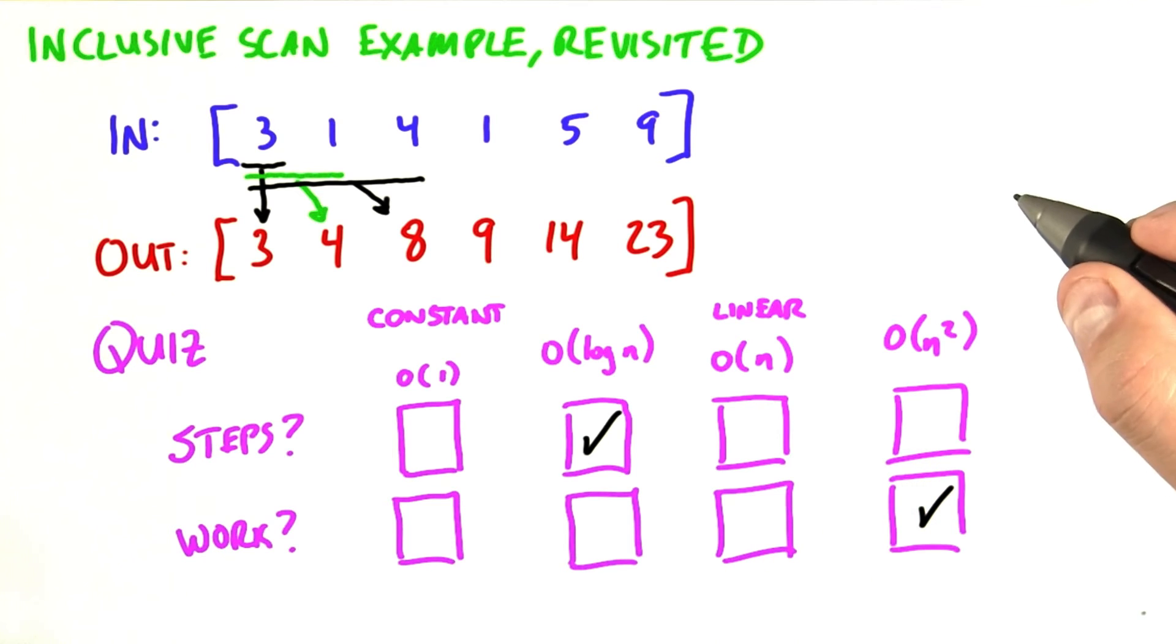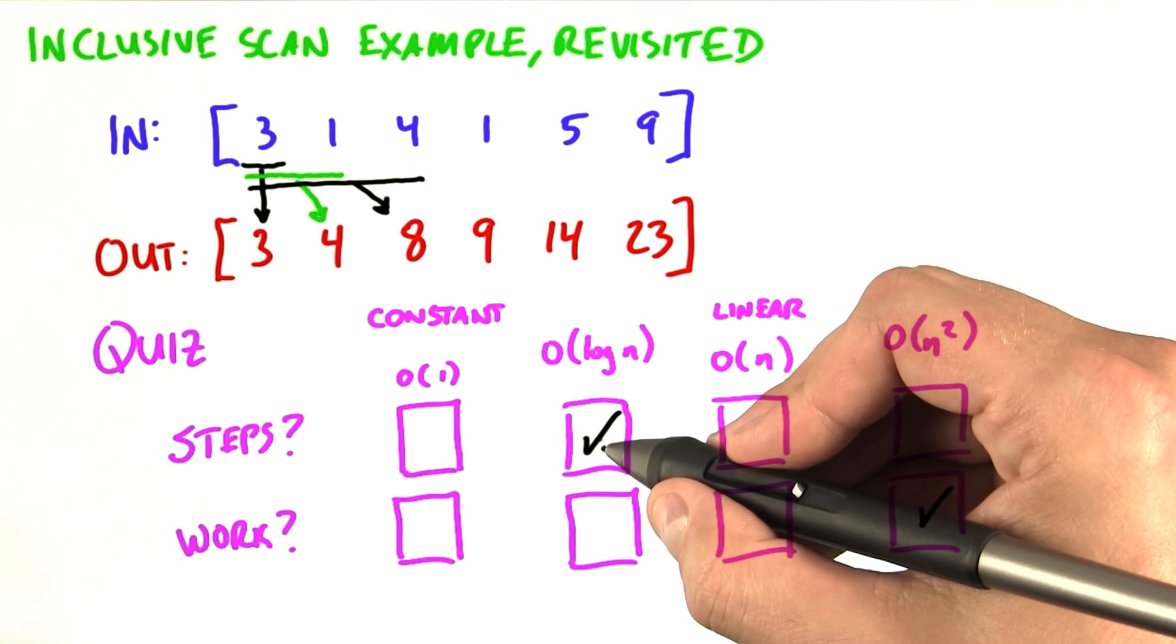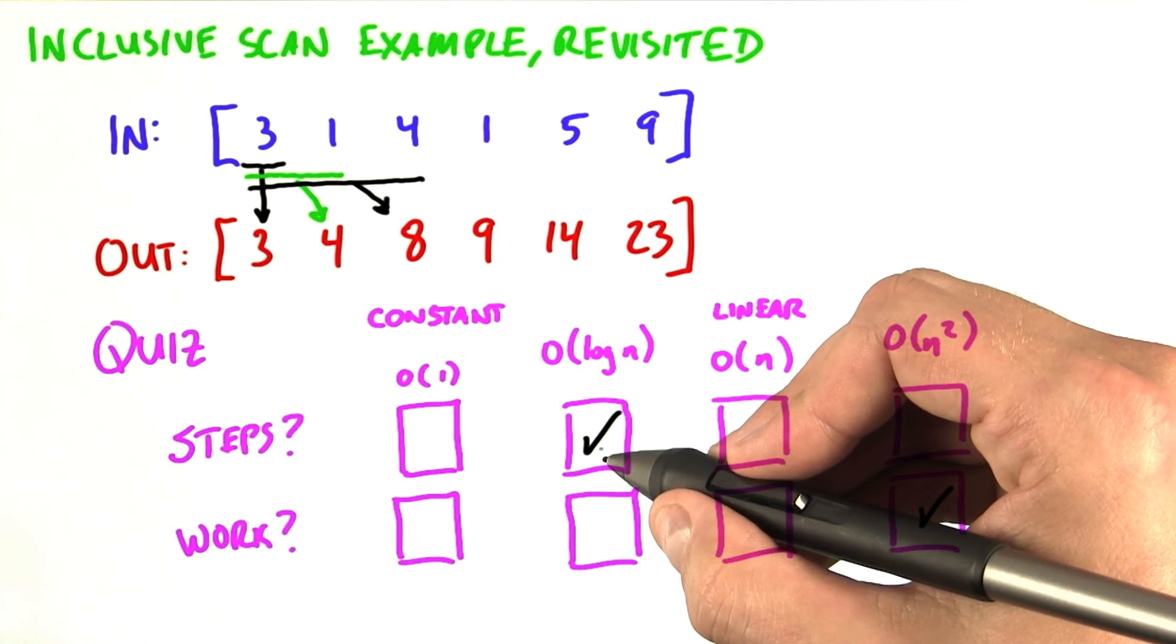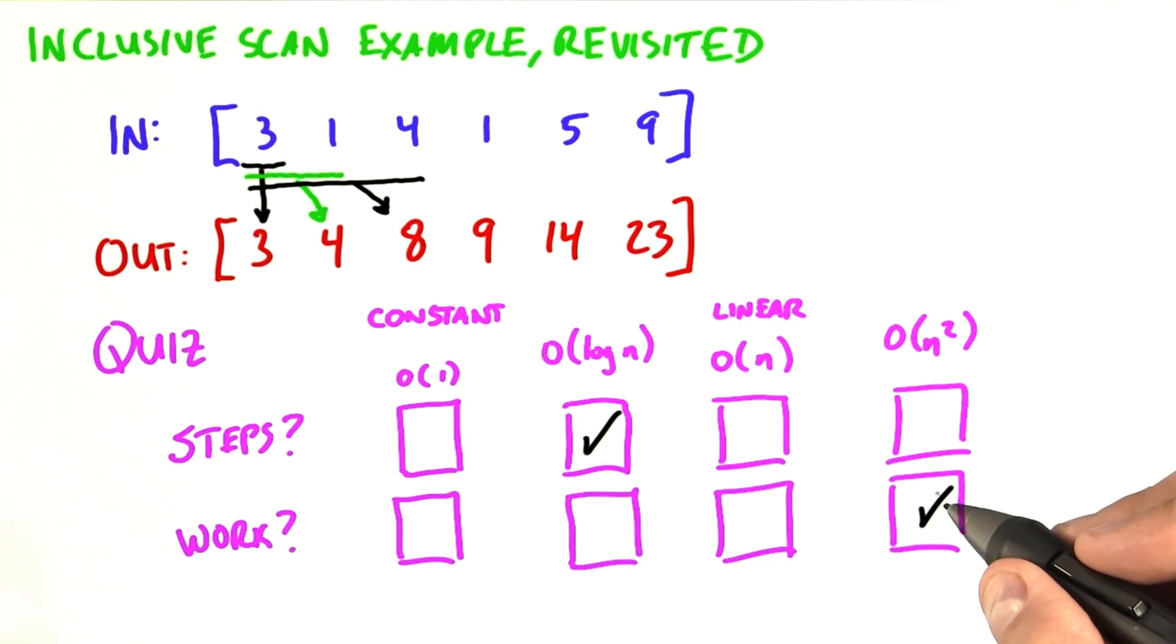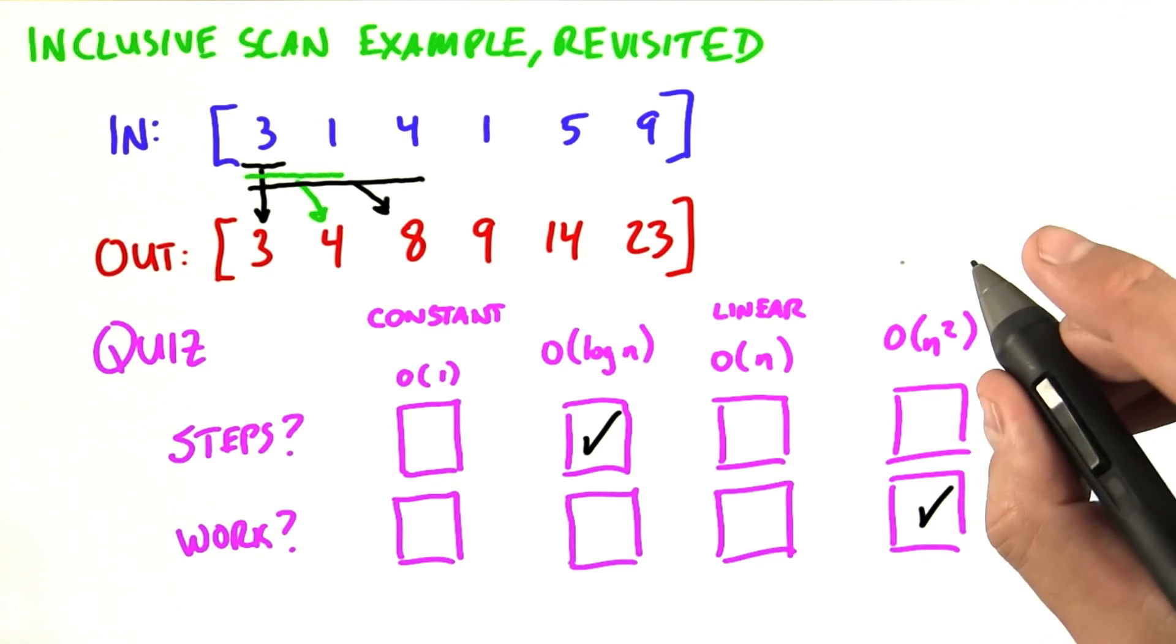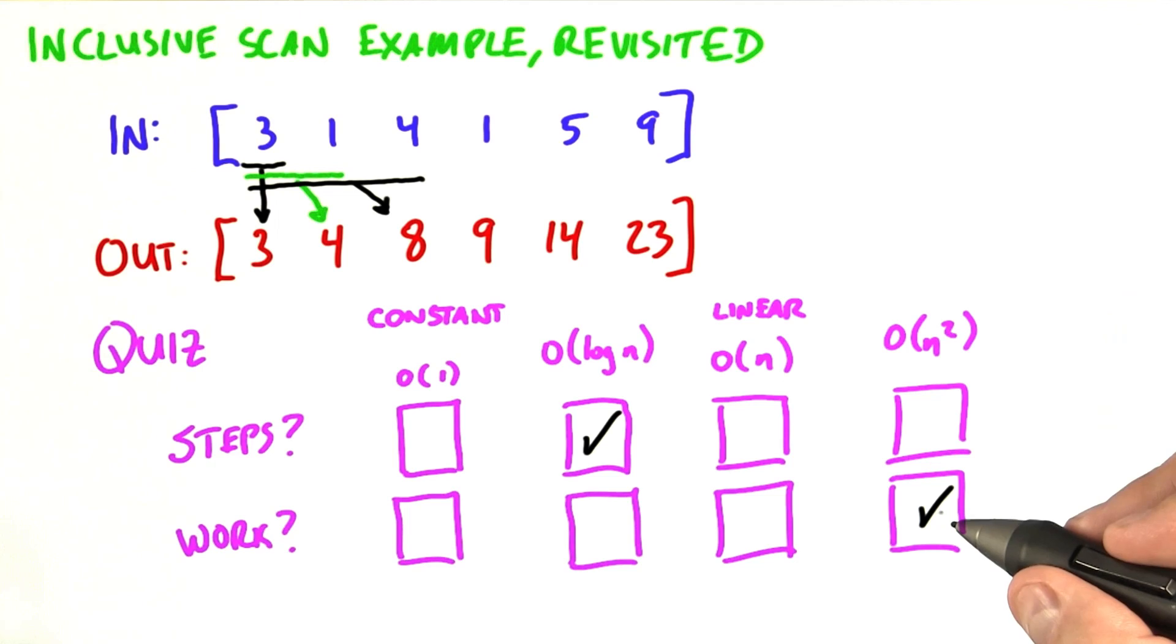So while we like having a smaller number of steps than the serial version, remember that took O of n steps, this quadratic work complexity makes this formulation of scan ridiculously inefficient. So, what we're going to do next is look at two other algorithms that have a more reasonable cost.